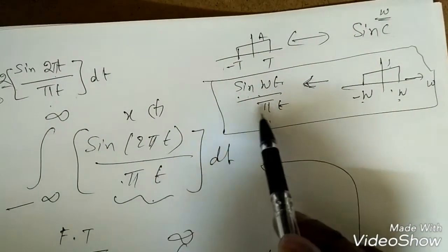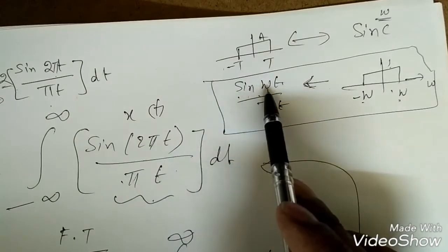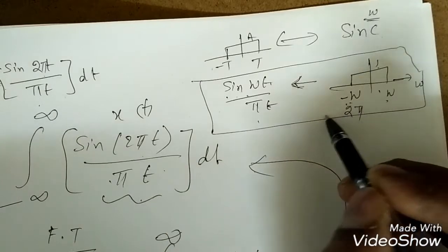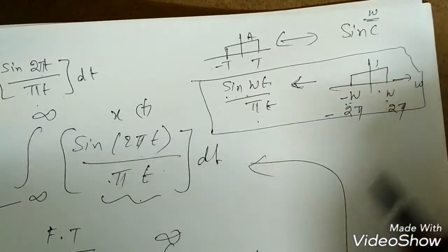2π over πt is the same, and in the case of w, in place of w we are having 2π. That means my w is nothing but minus 2π to 2π, that's it.